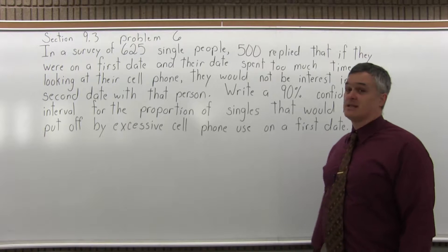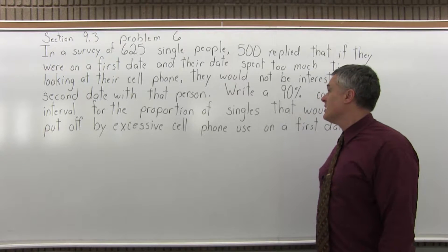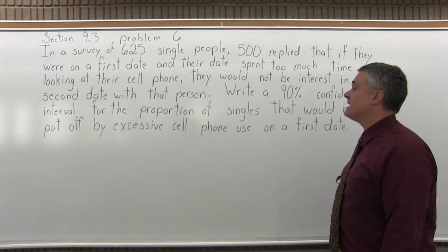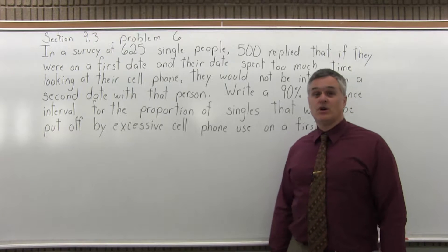they would not be interested in a second date with that person. Write a 90% confidence interval for the proportion of singles that would be put off by excessive cell phone use on a first date.